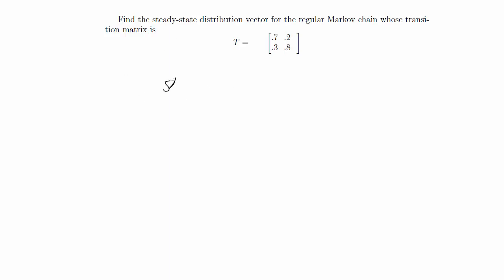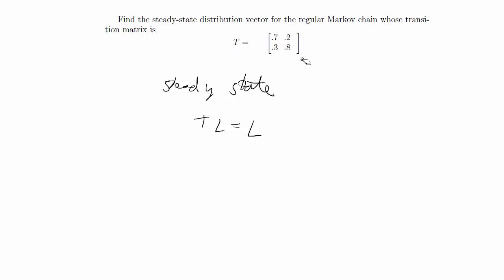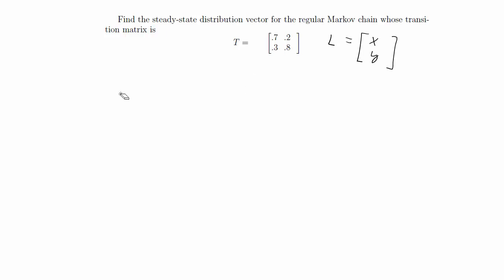When you're given the transition matrix, the steady-state vector equation that you want to use is going to be TL equals L, where T is the transition matrix and L will be the vector that you're looking for. In this case, because this is a 2 by 2 matrix, let's start off by saying L is going to be [X, Y], and then we're going to solve for what X and Y are.